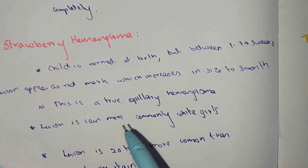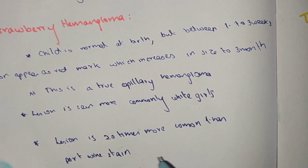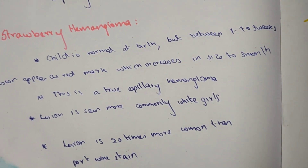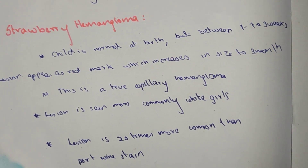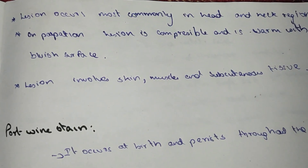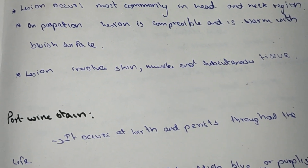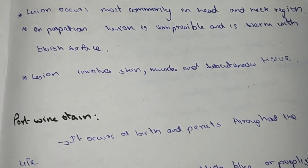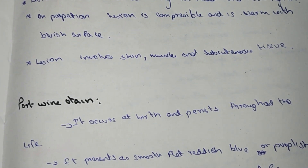This is the true capillary hemangioma. The lesion is seen more commonly in white girls and is 20 times more common than port wine stain. The strawberry hemangioma lesion occurs mostly in the neck; it can be palpable and compressible, and it is warm with a bluish face. The lesion involves skin, muscle, and subcutaneous tissue.